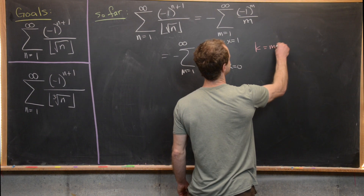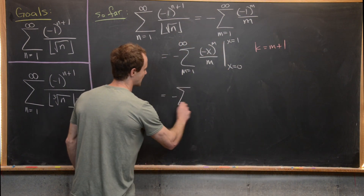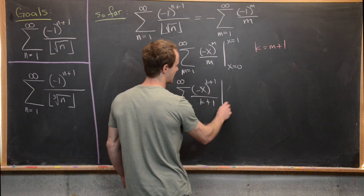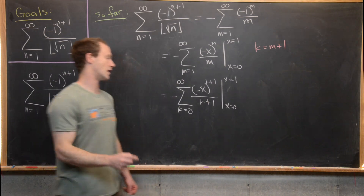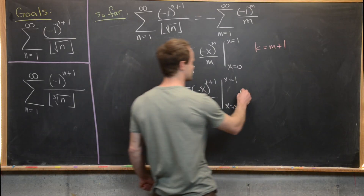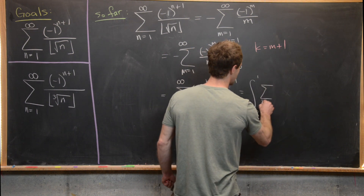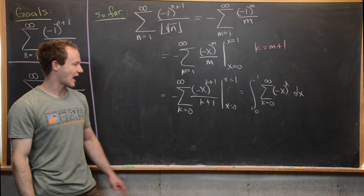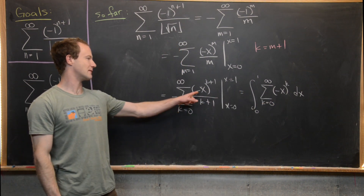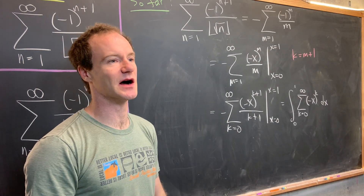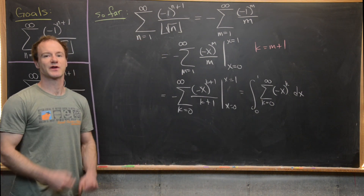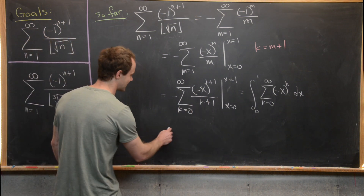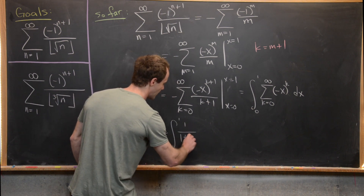Let k equal m minus 1, so the sum becomes the integral from 0 to 1 of the sum k equals 0 to infinity of minus x to the k, dx. Taking the antiderivative of minus x to the k gives minus x to the k plus 1 over k plus 1. This inner series is a geometric series with common ratio minus x, so it sums to 1 over 1 plus x. We can therefore rewrite the expression as the integral from 0 to 1 of 1 over 1 plus x, dx.